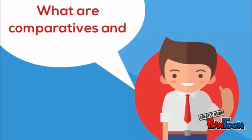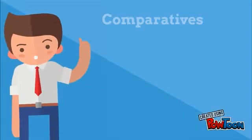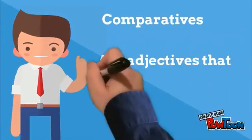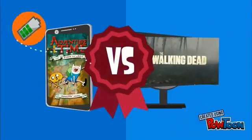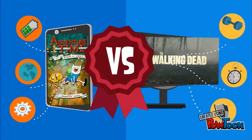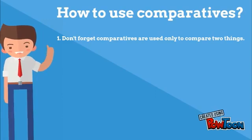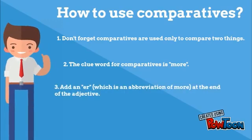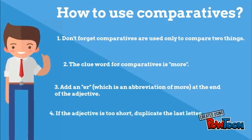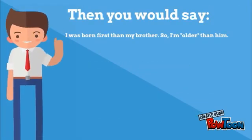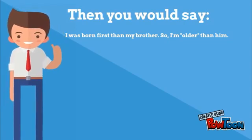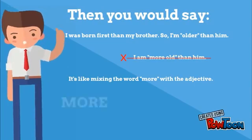What are comparatives and superlatives? Comparatives are adjectives that compare only two things — it's like comparing cartoons and TV series. How to use comparatives? Don't forget, comparatives are used only to compare two things. The clue word for comparatives is 'more' or '-er,' which is an abbreviation of 'more' added at the end of the adjective. If the adjective is too short, just duplicate the last letter. You would say: 'I was born first, so I am older than him.' What you cannot say is 'I am more old than him' — this is not correct. It's like mixing the word 'more' with the adjective.